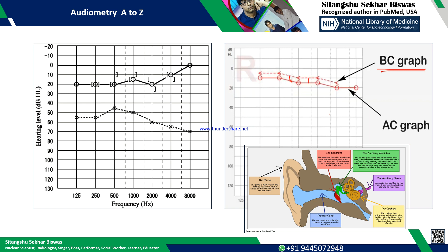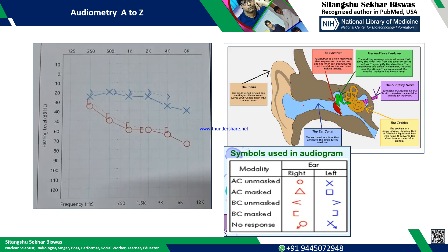If the air bone gap is greater than 15 dB, there is some obstruction in the ear canal or problem in the middle ear. Using your presence of mind, you can understand where the problem is. Now I am coming to one practical graph — this is for a patient who experienced an accident, and after that accident they took the audiometry and this is the result.